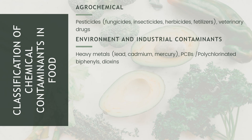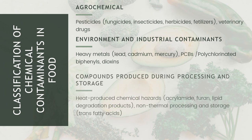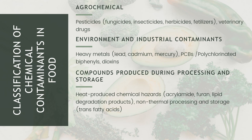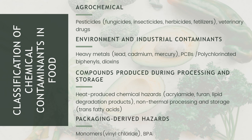Third, compounds produced during processing and storage — we have heat-produced chemical hazards such as acrylamide, furan, lipid degradation products, and non-thermal processing and storage byproducts like trans fatty acids. Lastly, packaging-derived hazards — we have monomers such as vinyl chloride and also BPA.